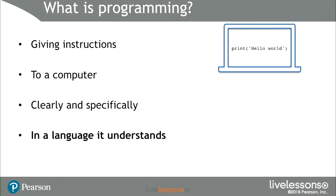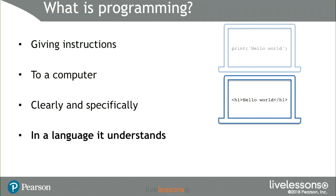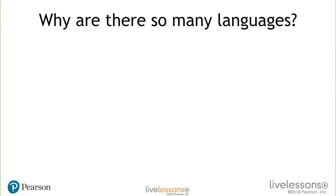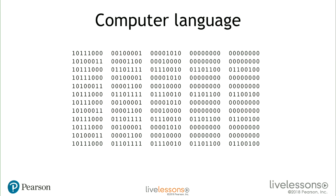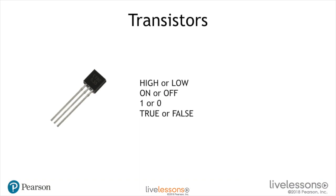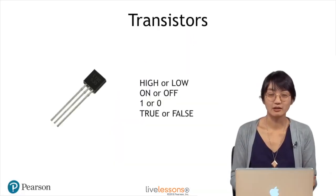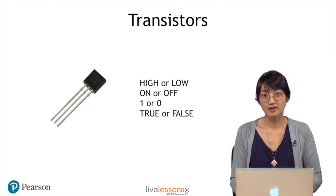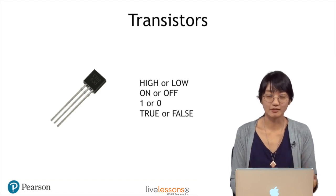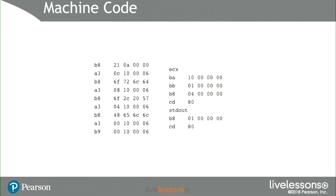Instructions should also be in a language that the computer understands. Computers can't understand human language yet, but they can understand Python, HTML, or binary. Why are there so many languages? Computers store data and respond to data — they only really understand ones and zeros, because computers are made up of electronic components like transistors and capacitors that understand ones and zeros. Either there's a lot of voltage or not, so high or low, on or off, one or zero, true or false — you'll see these binary states again and again in programming.